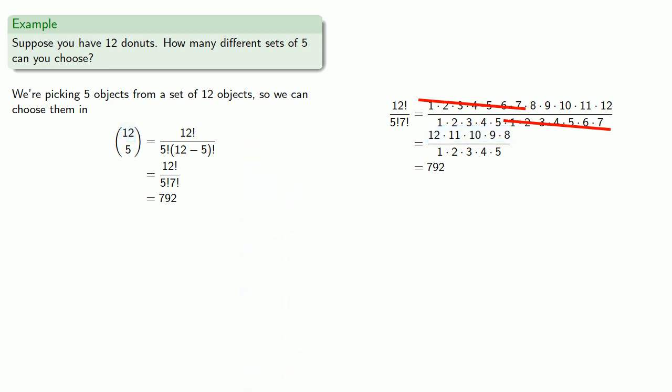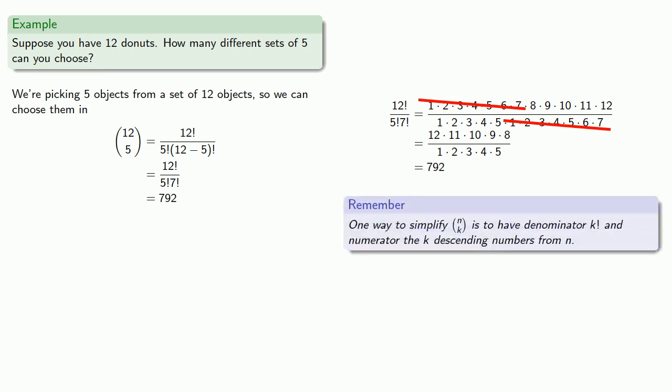The important thing to notice here is that not only are these top numbers in descending order, there are exactly 5 of them. The number of factors in the numerator is exactly equal to the number of factors in the denominator. So one way to simplify n choose k is to have the denominator k factorial and the numerator the k descending numbers from n.